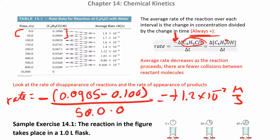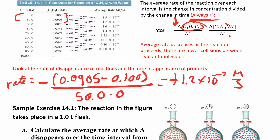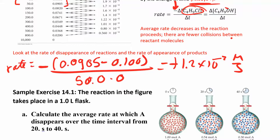If you're looking at a product, the change in concentration over time is always going to be positive, because you're always making the product. There's a relationship between the reactant rate and the product rate — if you know how the reactant is changing, you can figure out how the products are changing using the stoichiometry of the reaction. We'll do that in a little bit.